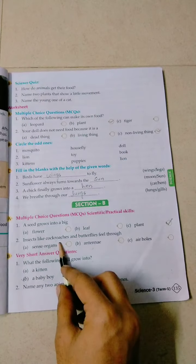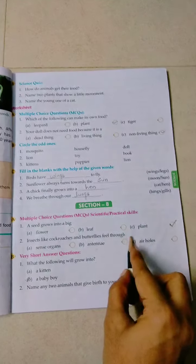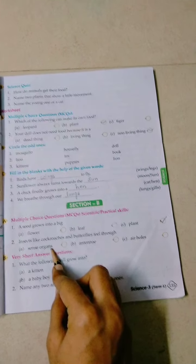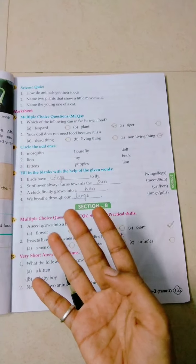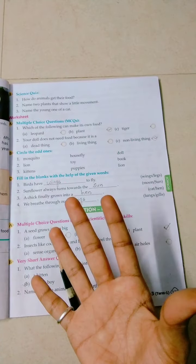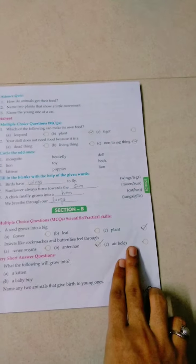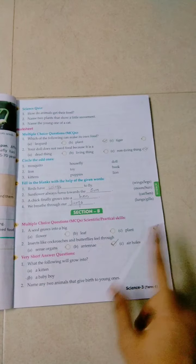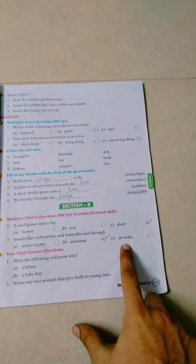Next, insects like cockroaches and butterflies feel through - as we learned, living things feel and react. First option is sense organs. Sense organs are what humans have. Humans have five sense organs: eye, ear, tongue, skin, and nose. Next is antenna. Antenna is what cockroaches and butterflies have, what insects have, so they can feel the changes around them. So the correct answer is antenna. Ear holes are also present in cockroaches and grasshoppers and mosquitoes, but ear holes are used for breathing, not for feeling changes around them.